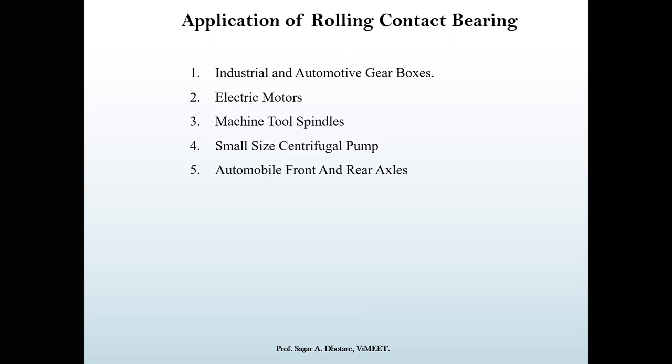Now discussing applications of rolling contact bearings: industrial and automotive gearboxes, electrical motors, machine tool spindles, small size centrifugal pumps, and automobile front and rear axles. Normally, rolling contact bearings are used where high speed conditions are present, as compared to sliding contact bearings. Where high RPM or rotational centrifugal force is more, rolling contact bearings are preferred.